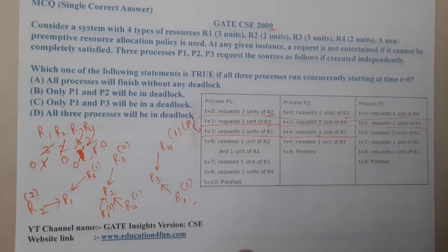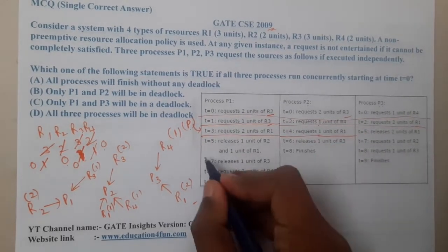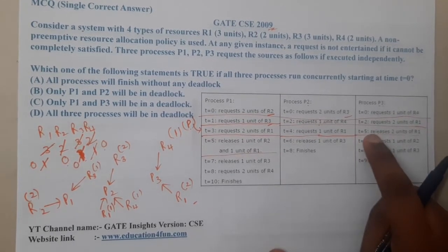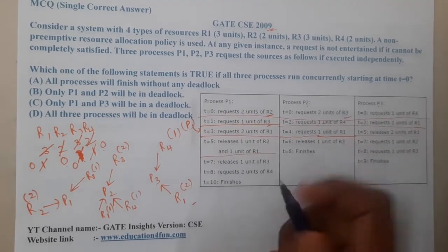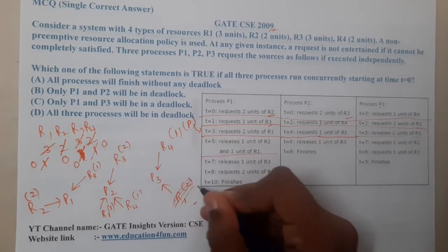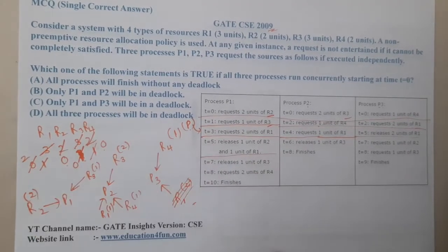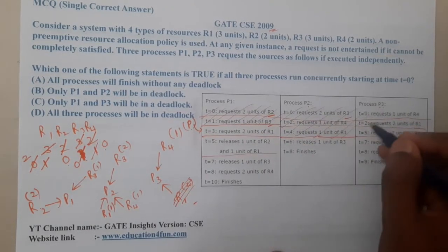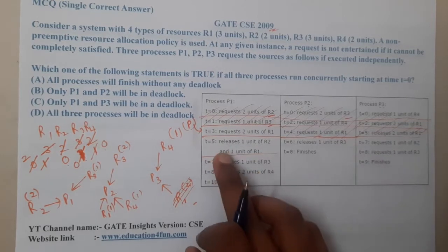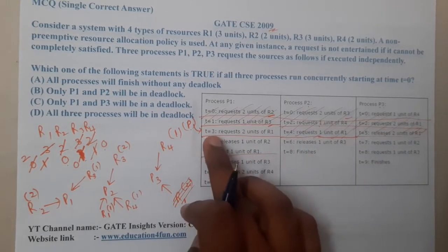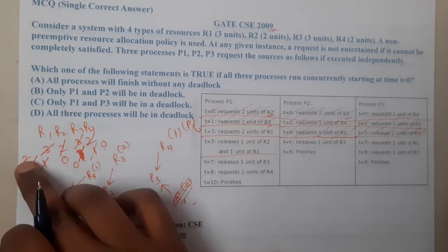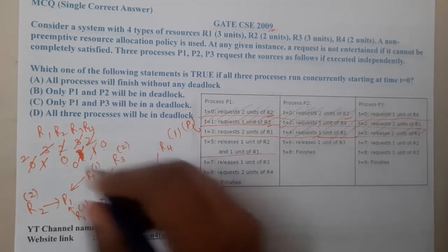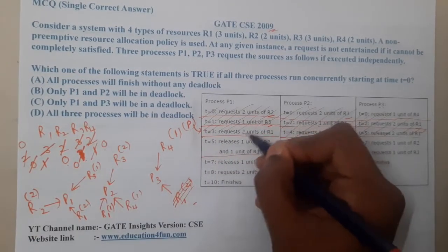At time t5, P3 releases its 2 units of R1. We now have 2 units of R1 available again. This step is done. Since we now have sufficient R1, we can also go back and execute P1's deferred t3 step — assigning 2 units of R1 to P1, bringing R1 to zero.